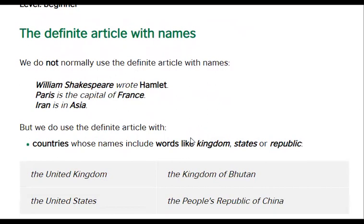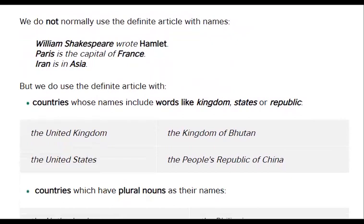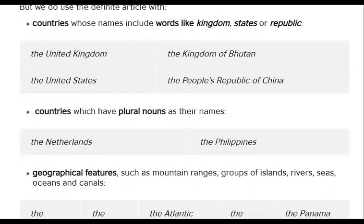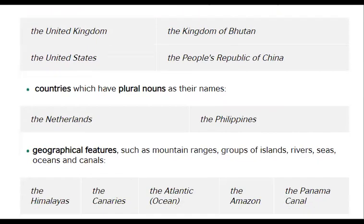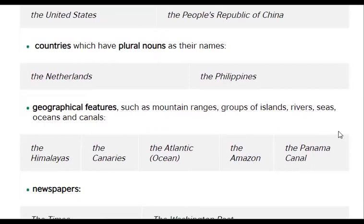We do use the definite article with countries whose names include words like kingdom, states, or republic: the United Kingdom, the Kingdom of Bhutan, the United States, the People's Republic of China. Also countries with plural nouns as their names: the Netherlands, the Philippines. And geographical features such as mountain ranges, groups of islands, rivers, seas, oceans, and canals: the Himalayas, the Canaries, the Atlantic, the Amazon, the Panama Canal.